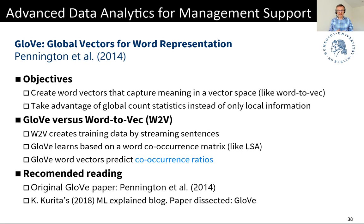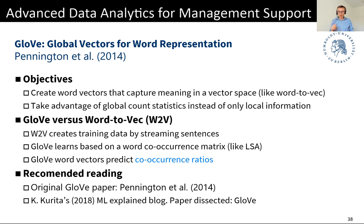Word2Vec is entirely driven by the local window moved over text sequences — there is no global analysis of the text. GloVe tries to address this by constructing word vectors that also take account of global co-occurrence counts, a bit like LSA. But while LSA's word vectors don't exhibit the nice analogical behavior, GloVe combines both worlds, predicting co-occurrence ratios.